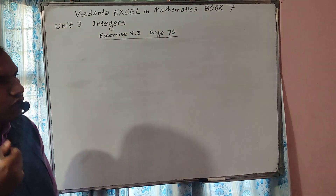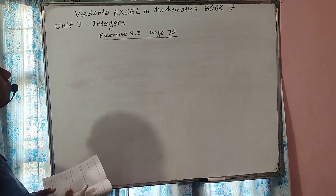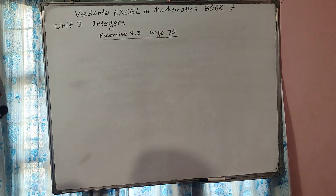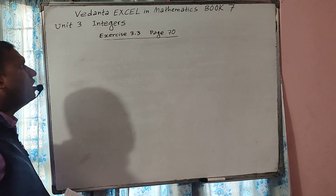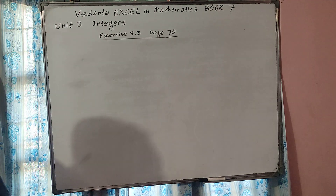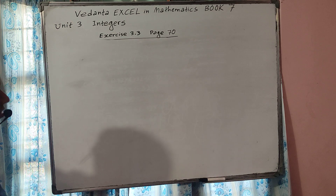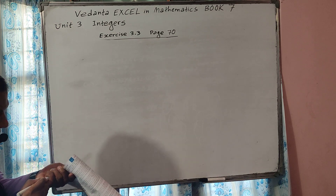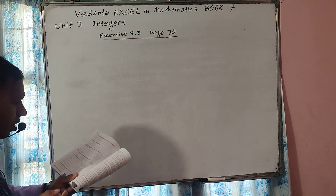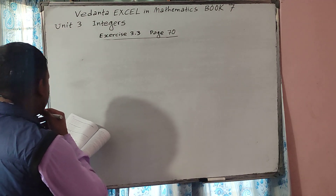My dearest students, good morning. Today we will do some questions from Bagandra Excellent Mathematics Book 7. The topic is Integers, Unit 3, Exercise 3.3, Page 70. Now we continue from Question number 5. Here we have to simplify.